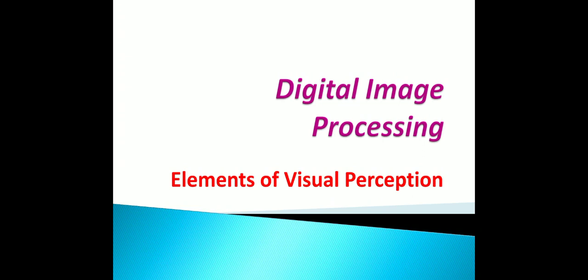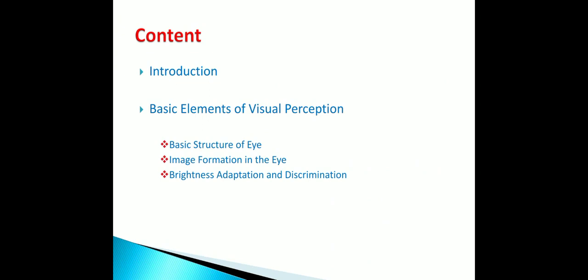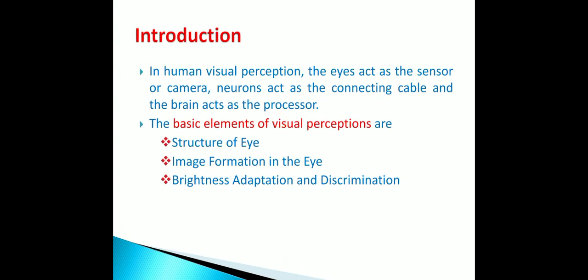Hello students, good morning. Today in digital image processing we will see one important topic: elements of visual perception. We will cover a small introduction and then the basic elements of visual perception — the structure of the eye, image formation in the eye, and brightness adaptation and discrimination. In visual perception, the eye acts as the sensor or camera, the neuron acts as the connecting cable, and the brain acts as the processor.